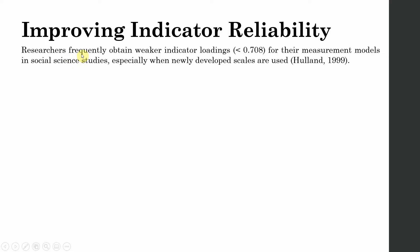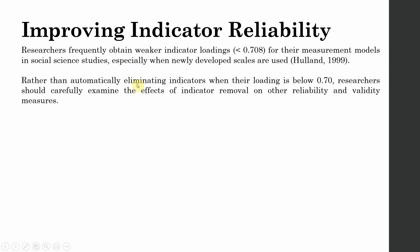Researchers frequently obtain weaker indicator reliability — that is, less than 0.708 — for their measurement models in social sciences studies, especially when newly developed scales are used. Rather than automatically eliminating indicators when their loading is less than 0.70, researchers should carefully examine the effects of indicator removal on reliability and validity.